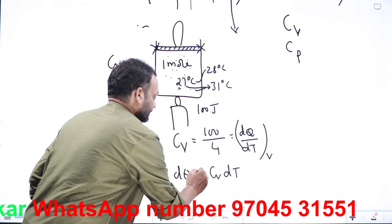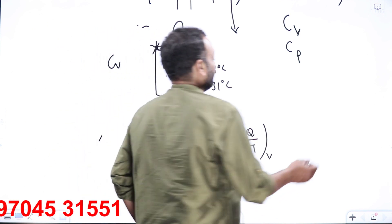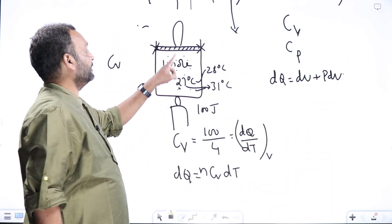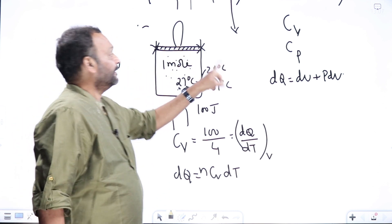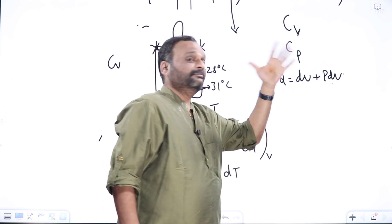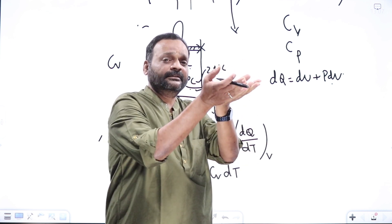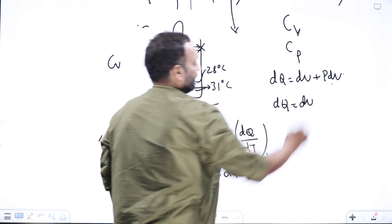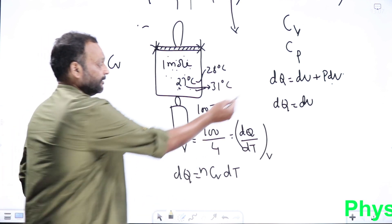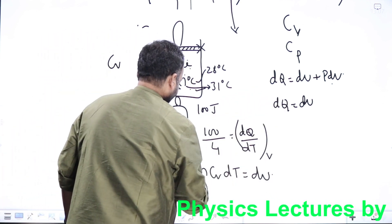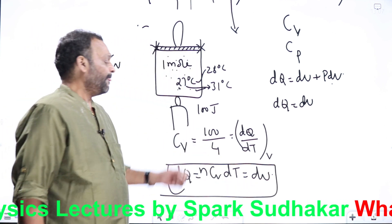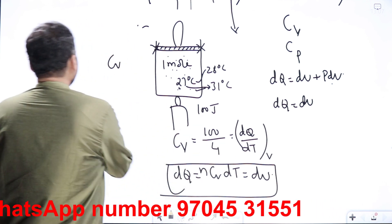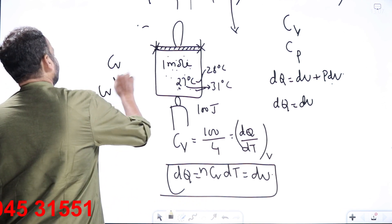From the first law, DQ equals dU plus P dV. In a constant volume (isochoric) process, dV equals zero, so DQ equals dU. Therefore dU equals n CV dT. This is a very general formula — wherever change in internal energy appears, you can write it as n CV dT, and internal energy U equals n CV T.